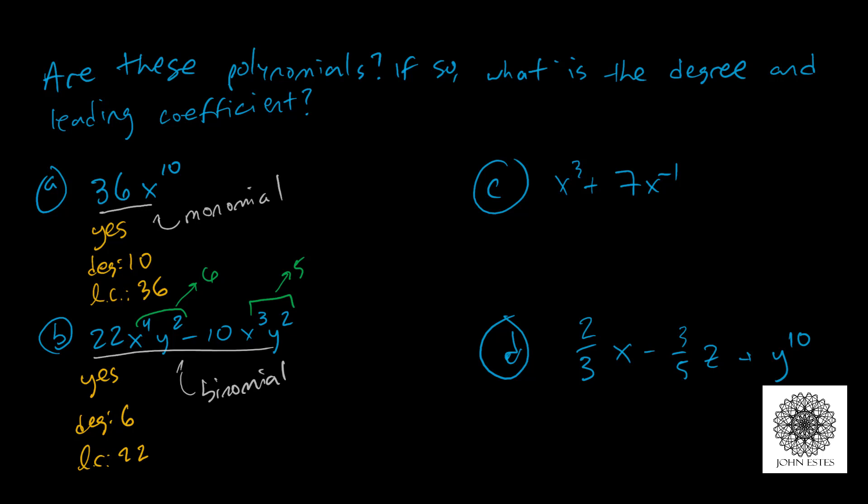Let's look at part C. This time I have x cubed plus 7x to the negative 1 power. Now we haven't defined what a polynomial is, so it's very easy to say this is a polynomial, but actually it's not a polynomial. Why is it not a polynomial? Because one of the things that we want in a polynomial is for our degrees to be positive, and we also want them to be integers.